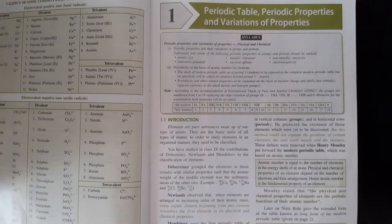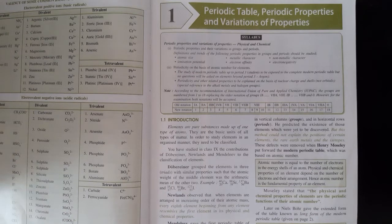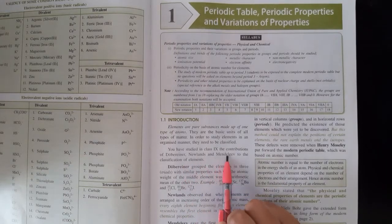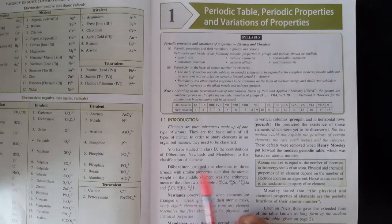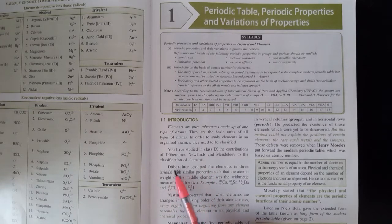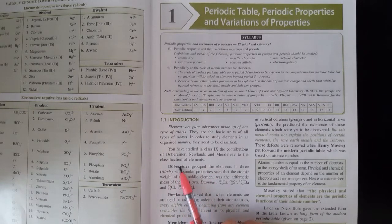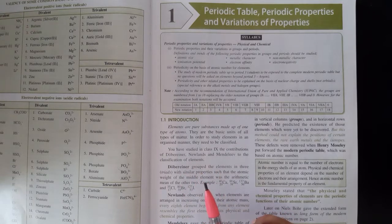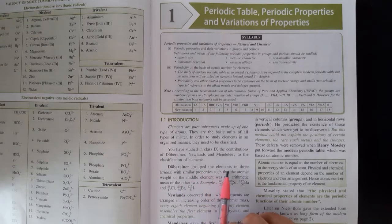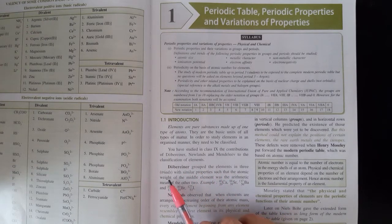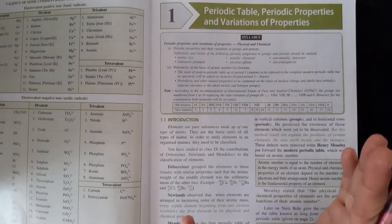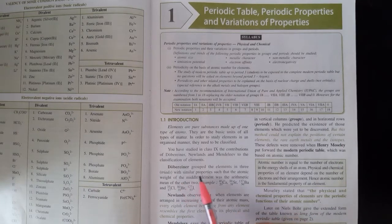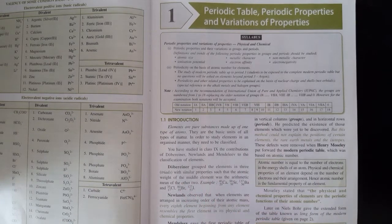In ninth class, we read about the contribution of Dobereiner, Newlands and Mendeleev. In short, we again revise this. In this chapter, number one: Dobereiner grouped the elements in 3 triads. 3 triads means 3 elements, with similar properties.